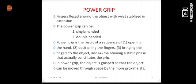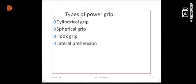Power grip is when fingers are flexed around the object with wrist stabilized in extension. We can have a single-handed power grip and a double-handed power grip as well. So there are various types of power grips. We can have cylindrical grip, spherical grip,